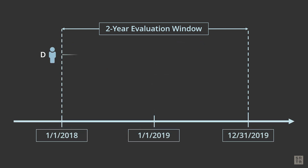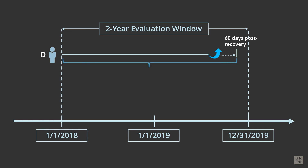Patient D was removed for recovery and was followed for 60 days post removal — person time accrued from Patient D's list date through the 60th day post removal. Patient D died after the 60th day follow-up, so D's death is not counted because it occurred after the 60-day cutoff. Patient E was also removed for recovery but died within the 60-day follow-up period — person time accrues from the list date to the death, and E's death is counted in this period.